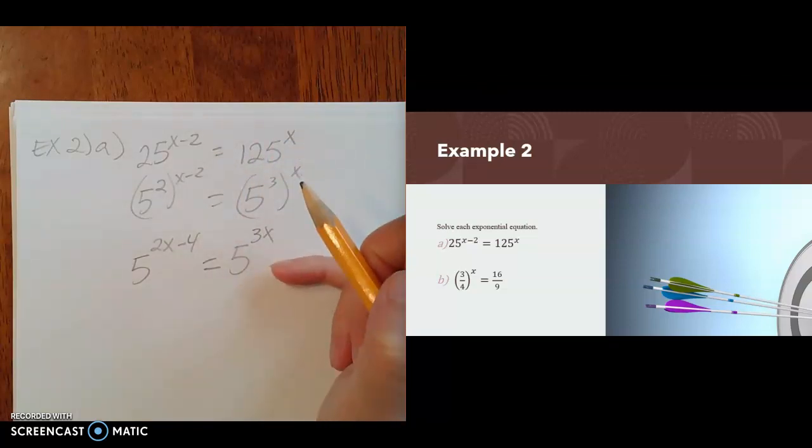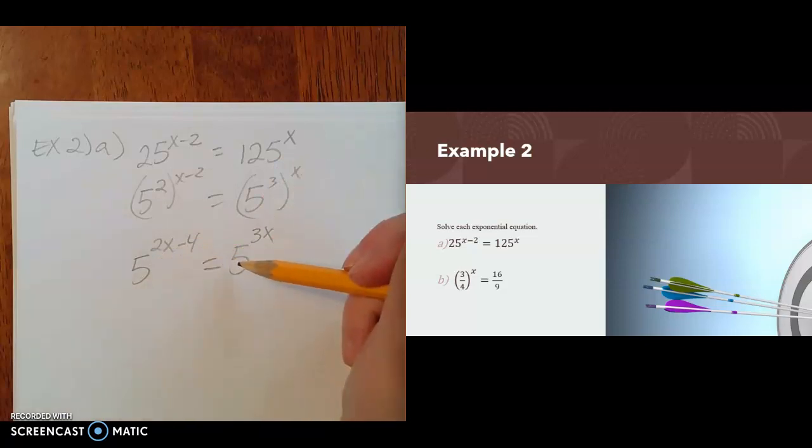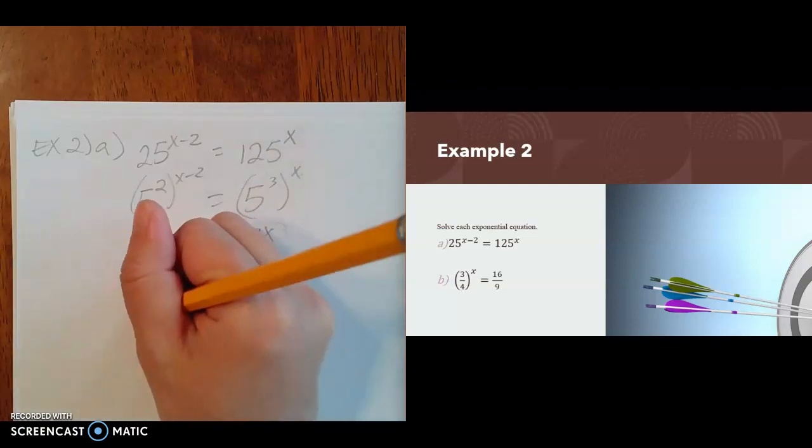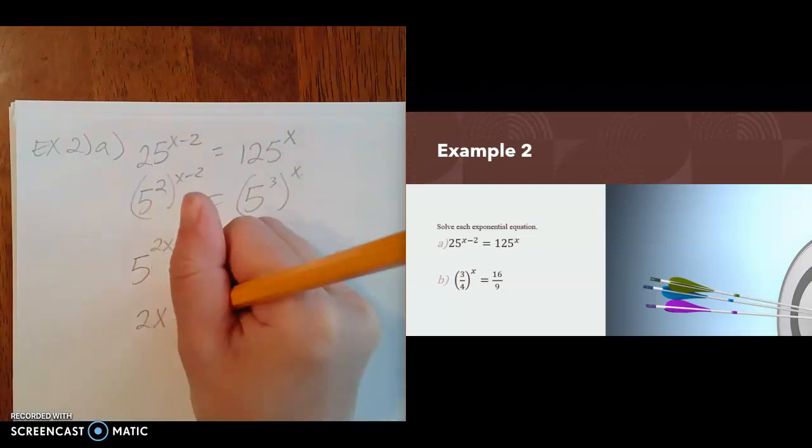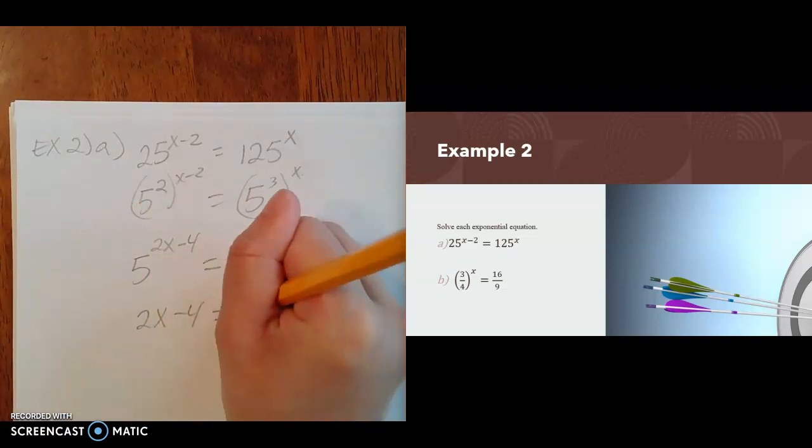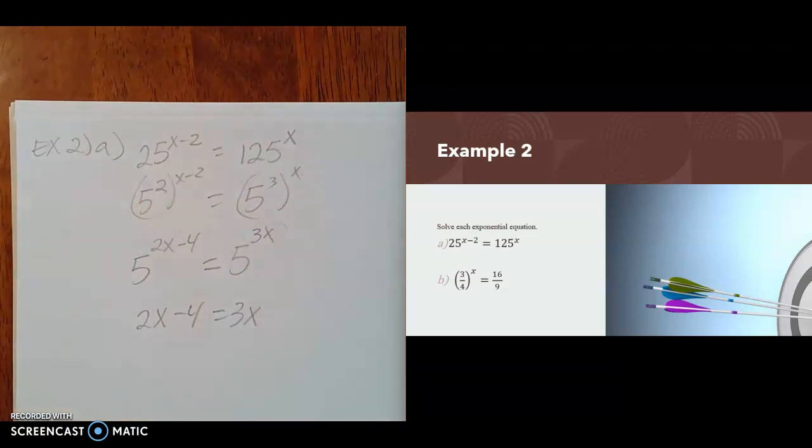And now I've got it in a format where I have the same base equal to each other, which means that those exponents have to be equal to each other for that statement to be true. So I'm going to set my exponents equal: 2x minus 4 equals 3x. And then I'll solve my little equation from here.